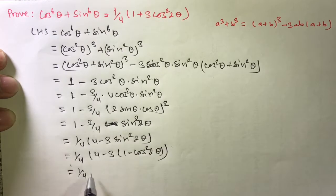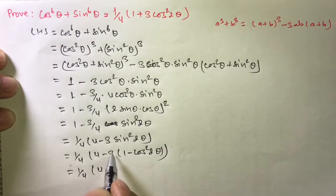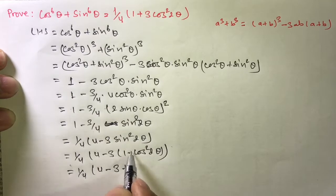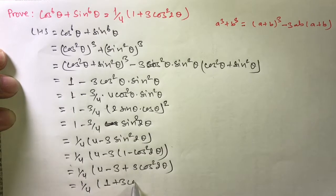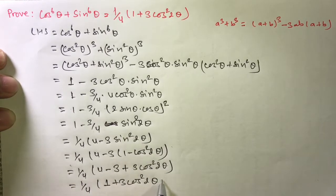And ¼(4 - 3(1 - cos²2θ)) = ¼(4 - 3 + 3cos²2θ) = ¼(1 + 3cos²2θ), which equals the RHS.